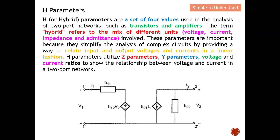These parameters are important because they simplify the analysis of complex circuits by providing a way to relate input and output voltage and current in a linear fashion. Anything that is linear is easy to predict and estimate. H parameters also utilize Z parameters, Y parameters, voltage ratio, and current ratio to show the relationship between voltage and current in a two-port network.